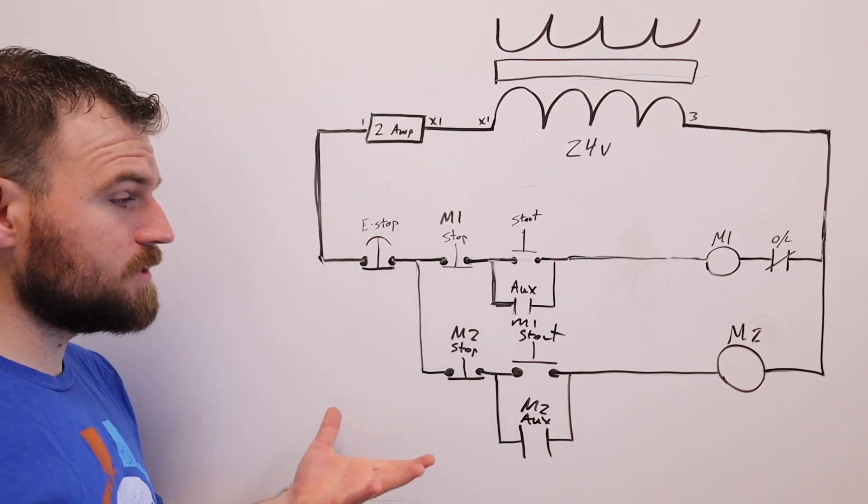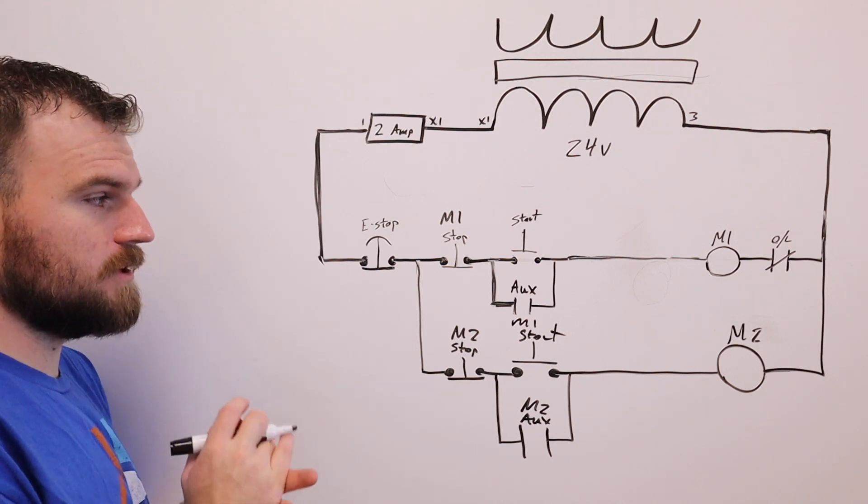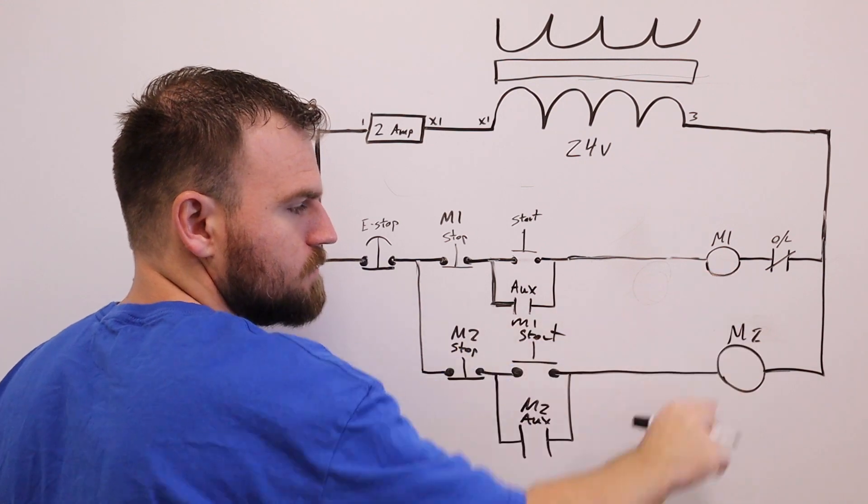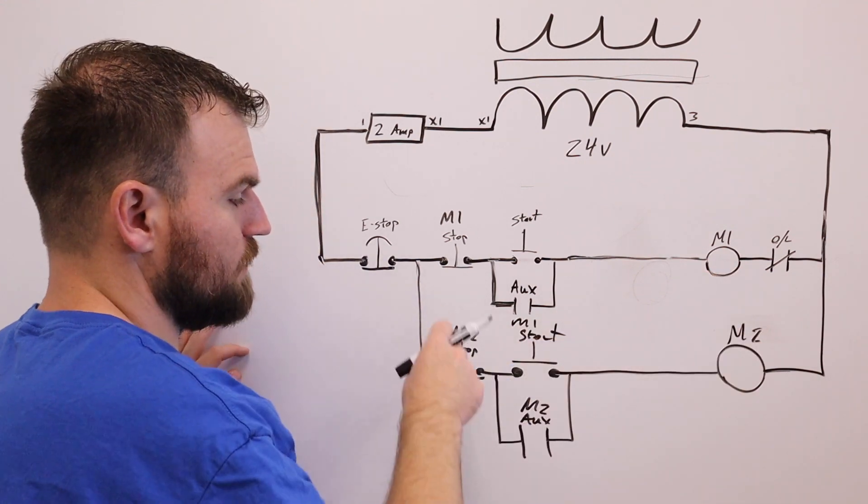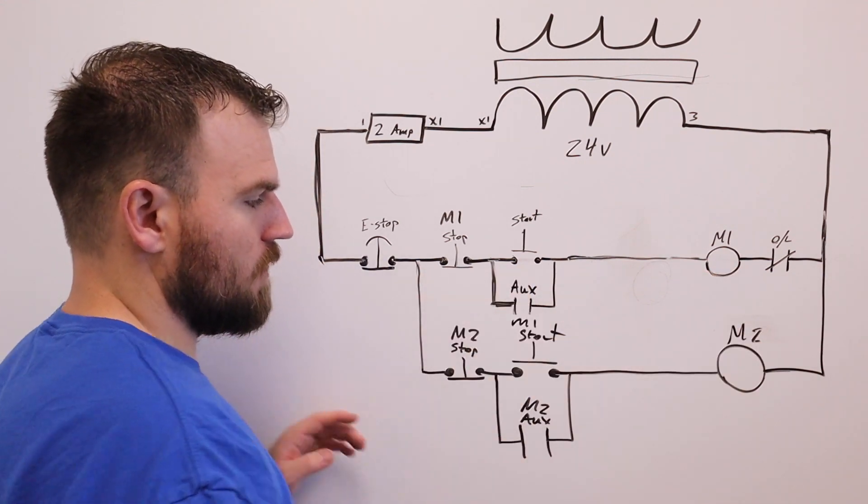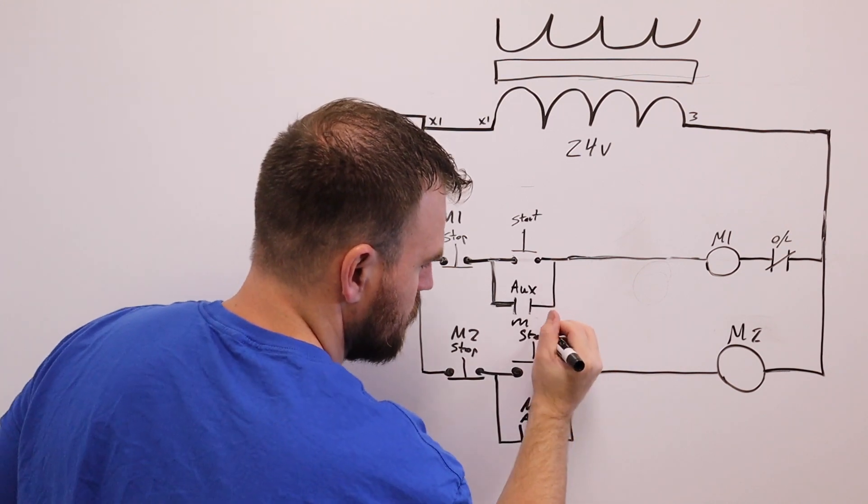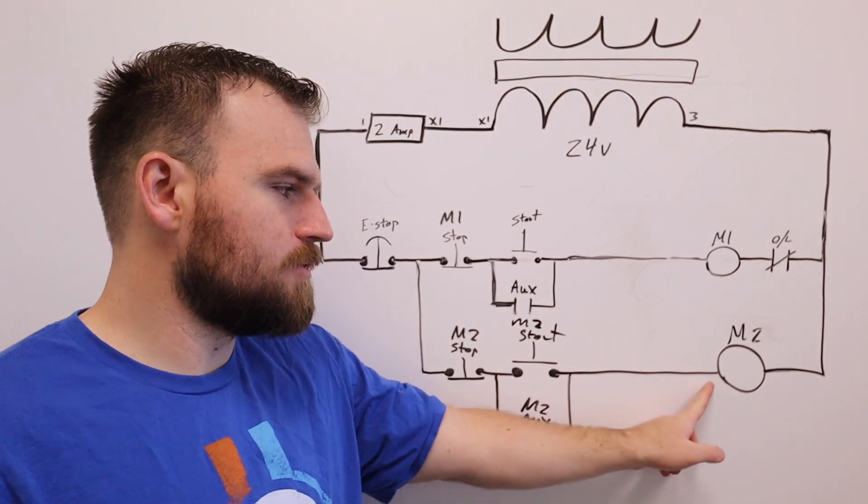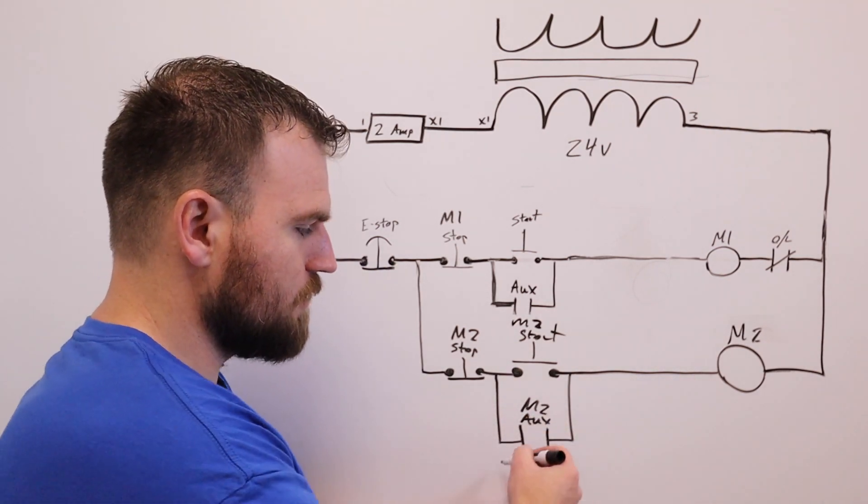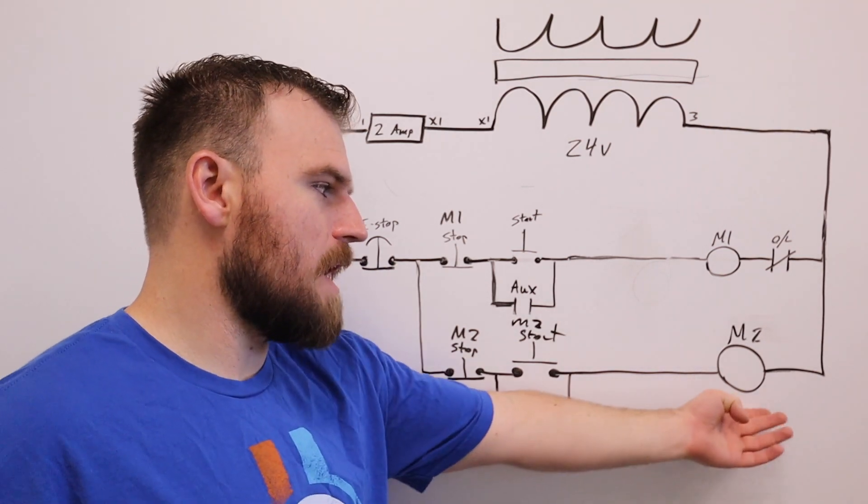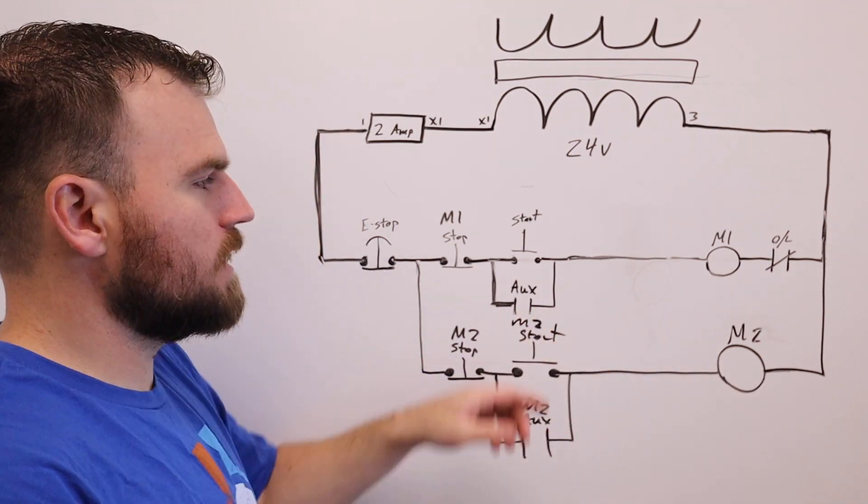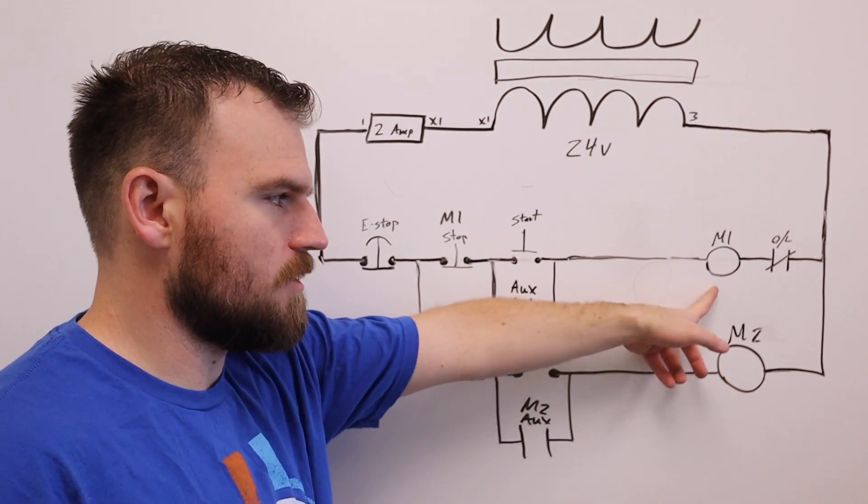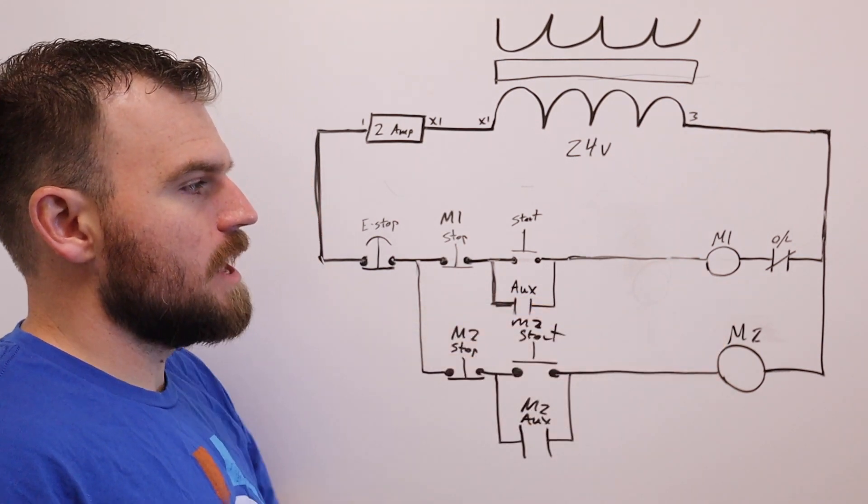That is pretty much the whole circuit - that's all we're going to be doing today. If you press the e-stop, there will be no power going to either one of these motor coils. If you were to press the start for M2, it will turn on the M2 coil, which will cause the auxiliary here to close and then keep M2 running. They're totally independent, so if I press the start button here, it's not going to turn on this rung down here - it's going to turn on motor one.